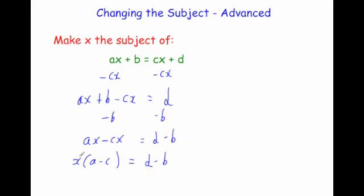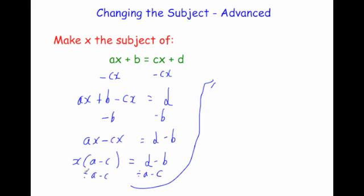Finally, we want x on its own. This is x times a minus c, so let's divide both sides by a minus c. The left hand side becomes x times a minus c divided by a minus c, which just leaves x. The right hand side is d minus b divided by a minus c. So x equals d minus b over a minus c — we've made x the subject.